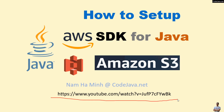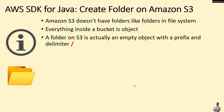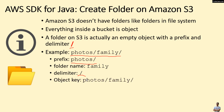Note that Amazon S3 doesn't have folders like folders in the file system. Everything inside a bucket is an object. A folder on S3 is actually an empty object with a prefix and a delimiter slash. For example, 'photos/family/' — the prefix is 'photos/', the folder name is 'family', the delimiter is the forward slash, and the object key is the whole name 'photos/family/'.